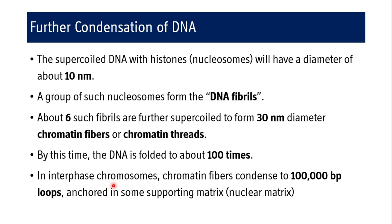What are the further condensation levels of DNA after the nucleosome? The supercoiled DNA with histones or nucleosomes has a diameter of about 10 nanometers. A group of such nucleosomes forms DNA fibrils. About six such fibrils are further supercoiled to form 30 nanometer diameter chromatin fibers or chromatin threads. By this time the DNA is folded about 100 times. In interphase chromosomes, chromatin fibers condense to one megabase pair loops anchored in a supporting nuclear matrix.